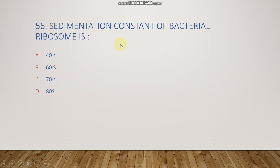The next question: the sedimentation constant of bacterial ribosomes is 40S, 60S, 70S, or 80S? The right answer is 70S. The 'S' stands for Svedberg unit, the sedimentation unit.